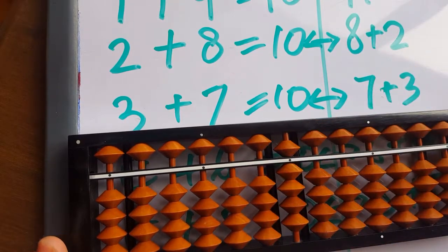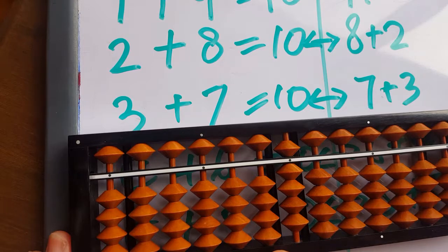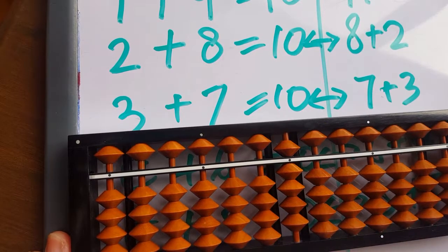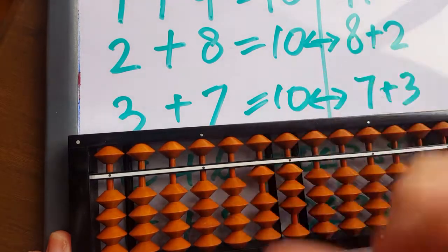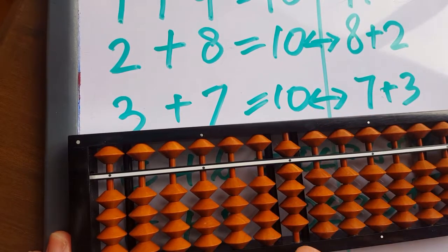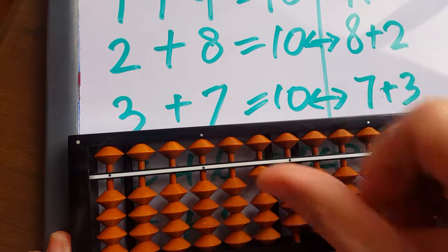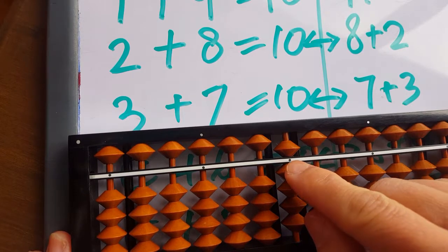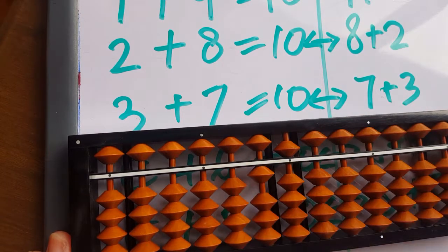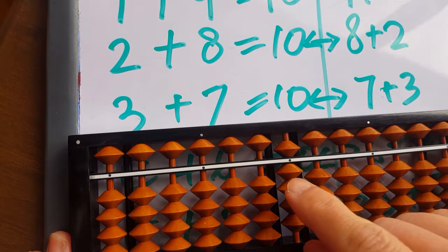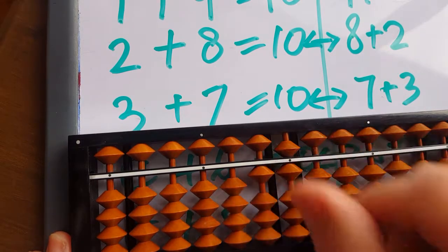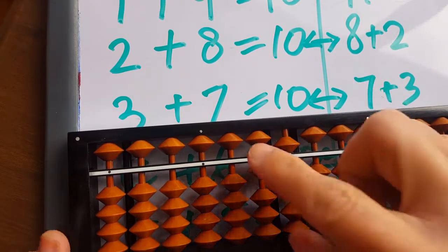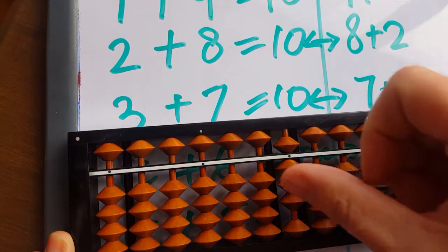Start with 9 again. How do I add 4? I can't. Friend of 4 is 6. Add 10. How do I add 5? I can't. Friend of 5 is 5. Take away 5, add the 10. Start with 9 again. How do I add 6? I can't. So I have to take away the 4. 6 and 4 goes into 10. How do I add 7? I can't. Friend of 7 is 3. Take away 3, go into 10. How do I add 8? I can't. Take away 2, add the 10. How do I add 9? Take away 1, add the 10.